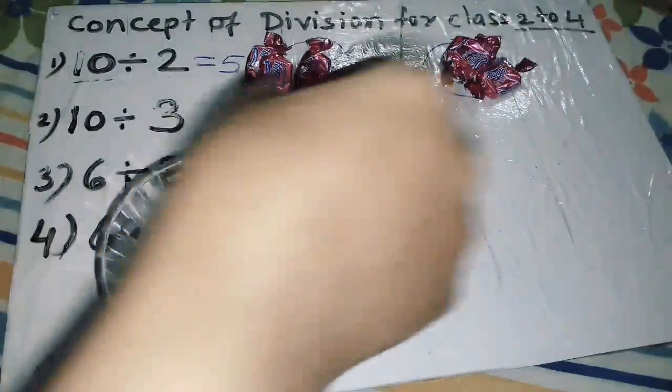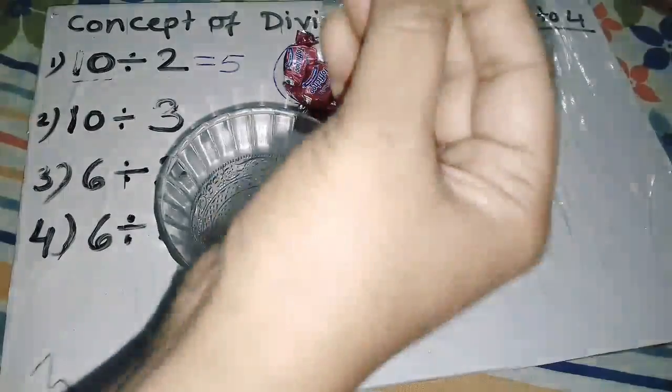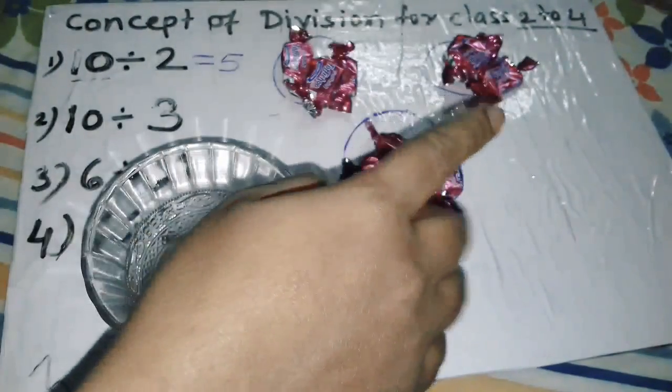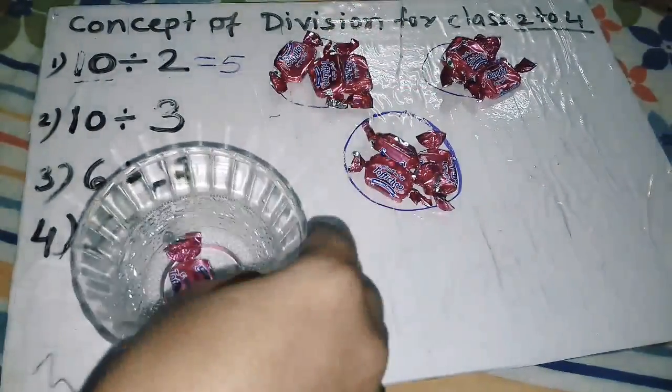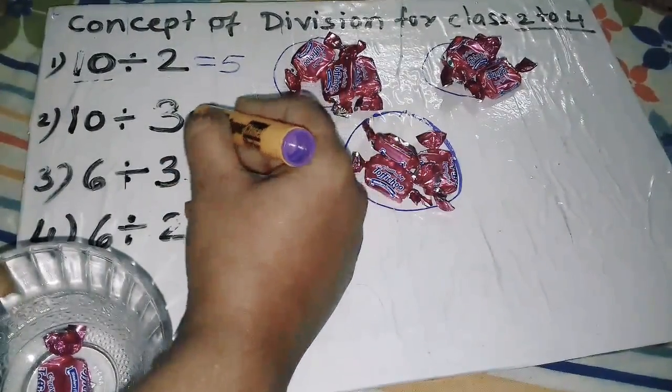Now I cannot distribute this single chocolate because it will not be equal. Every friend will get three chocolates each equal and one chocolate remains. What will be the answer of 10 divided by 3?